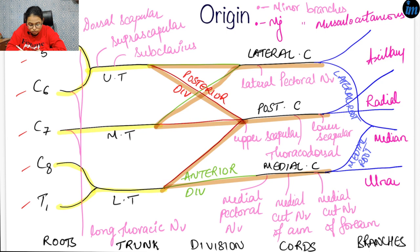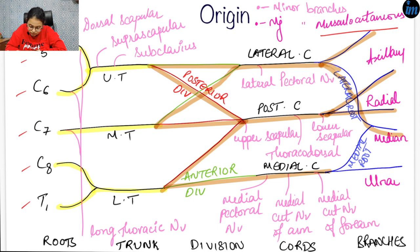These three cords further give major branches. The lateral cord gives two major branches: musculocutaneous nerve and the lateral root of the median nerve. The posterior cord gives axillary nerve and radial nerve. The medial cord gives the medial root of the median nerve and ulnar nerve.